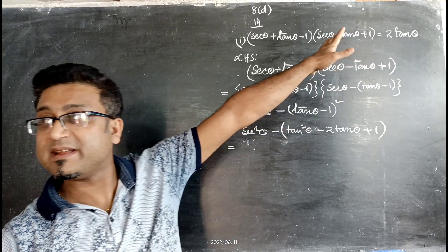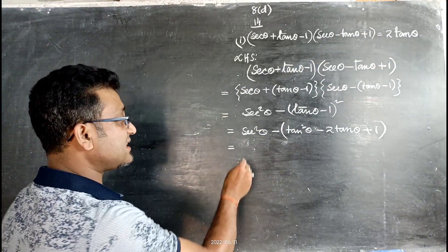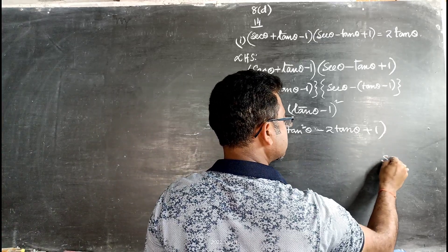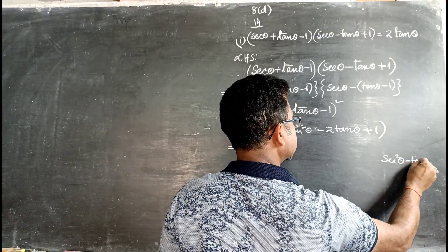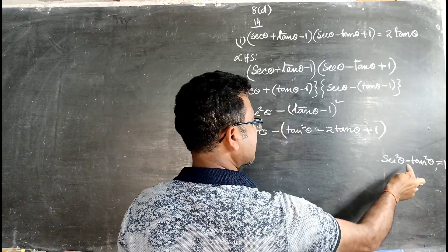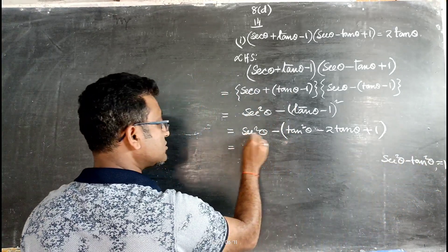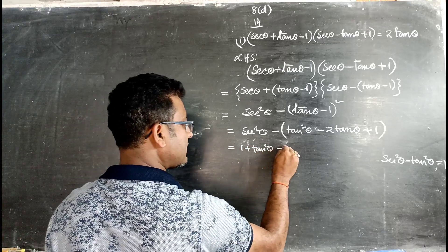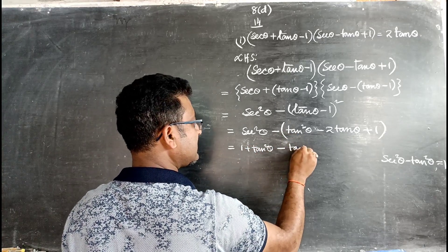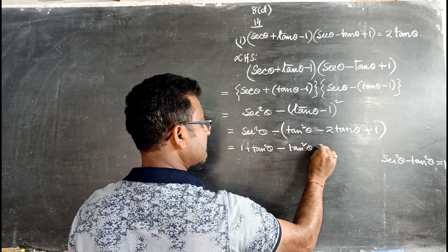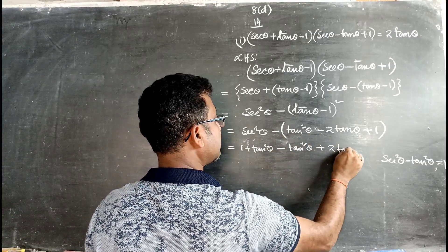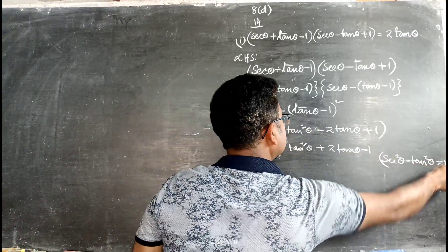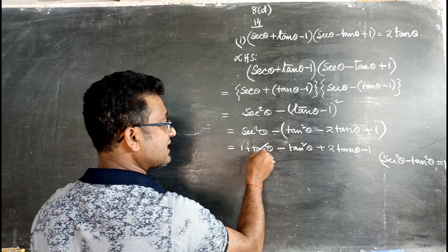Since the right hand side is in terms of tan θ, we convert sec²θ. We know sec²θ - tan²θ = 1, so sec²θ = 1 + tan²θ. Substituting: 1 + tan²θ - tan²θ + 2tanθ - 1.